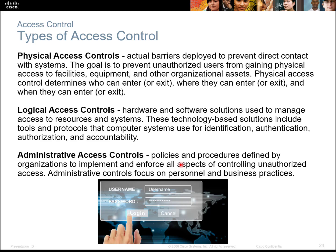Administrative access controls are at your administration level, where they make policies and procedures that define what is illegal — such as downloading code that you should not have. A huge aspect of industry is administrative control. Companies need to have very good policies and procedures in place. Otherwise, if something occurs, they may not have any recourse because there is no policy or procedure for that situation. More and more companies are beginning to adapt these new changes.